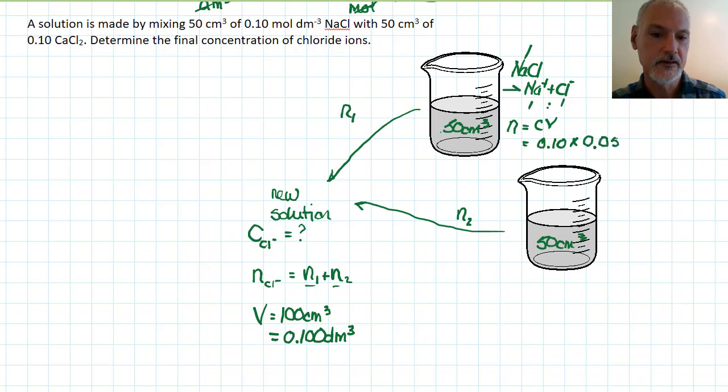My concentration is 0.10, my volume when I convert it, dividing by 1000, multiply those two together. That then gets me the number of moles, 0.0050 moles of chlorine ions from my first beaker.